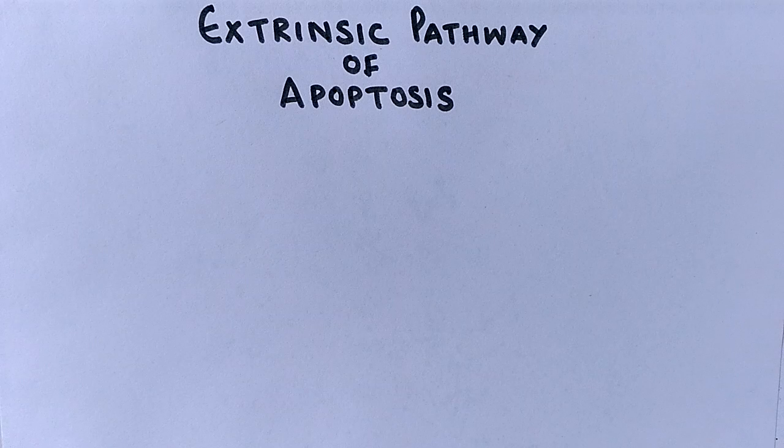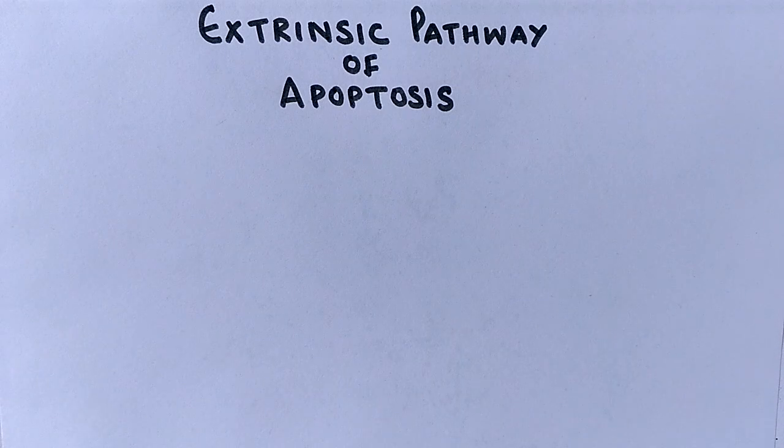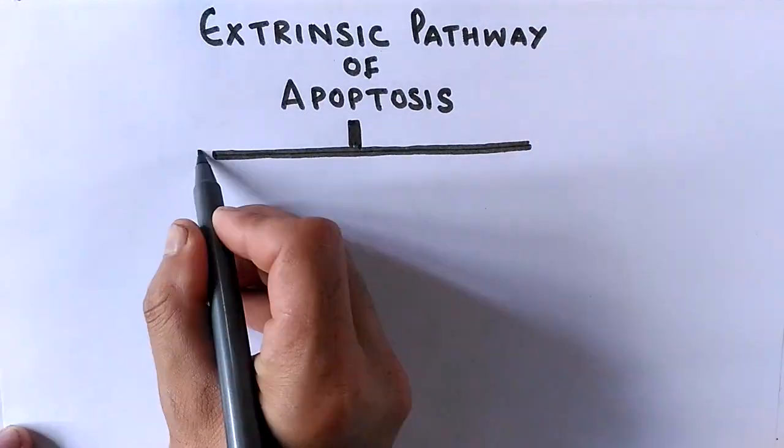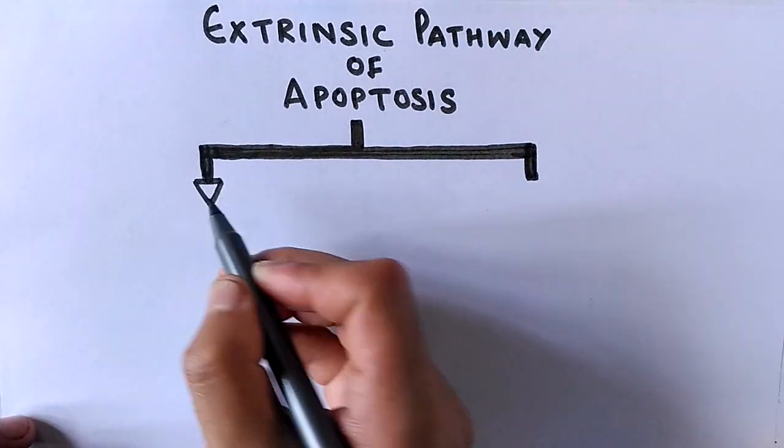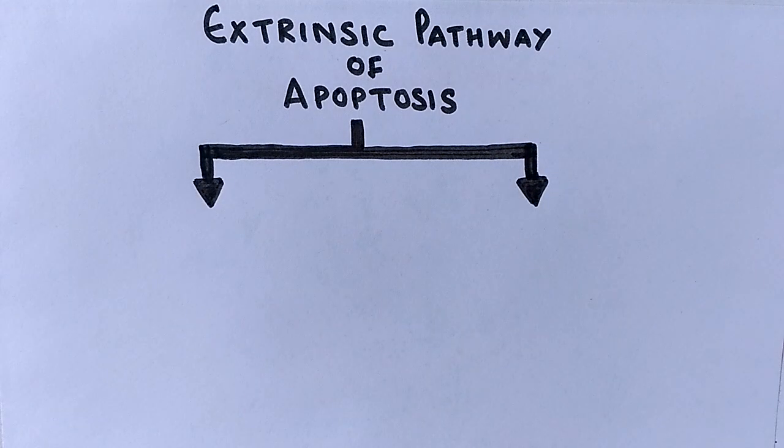In the extrinsic pathway of apoptosis, it's driven by extracellular apoptotic signals or signaling molecules. Either it may be another cell initiating the pathway or molecules secreted by other cells.